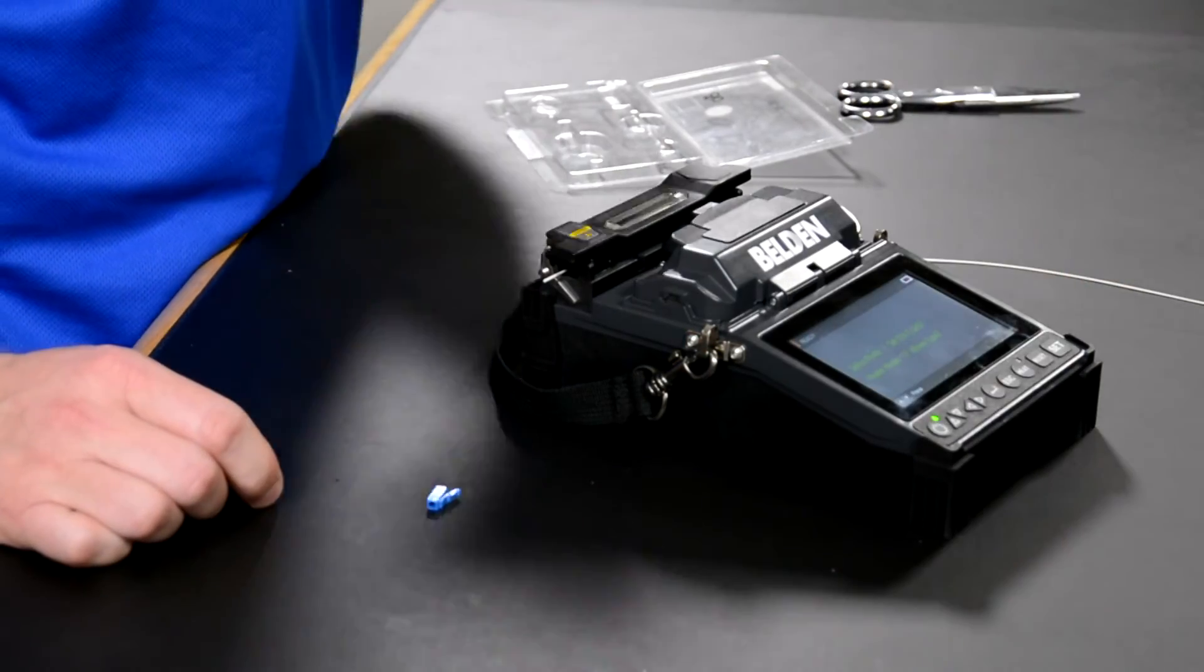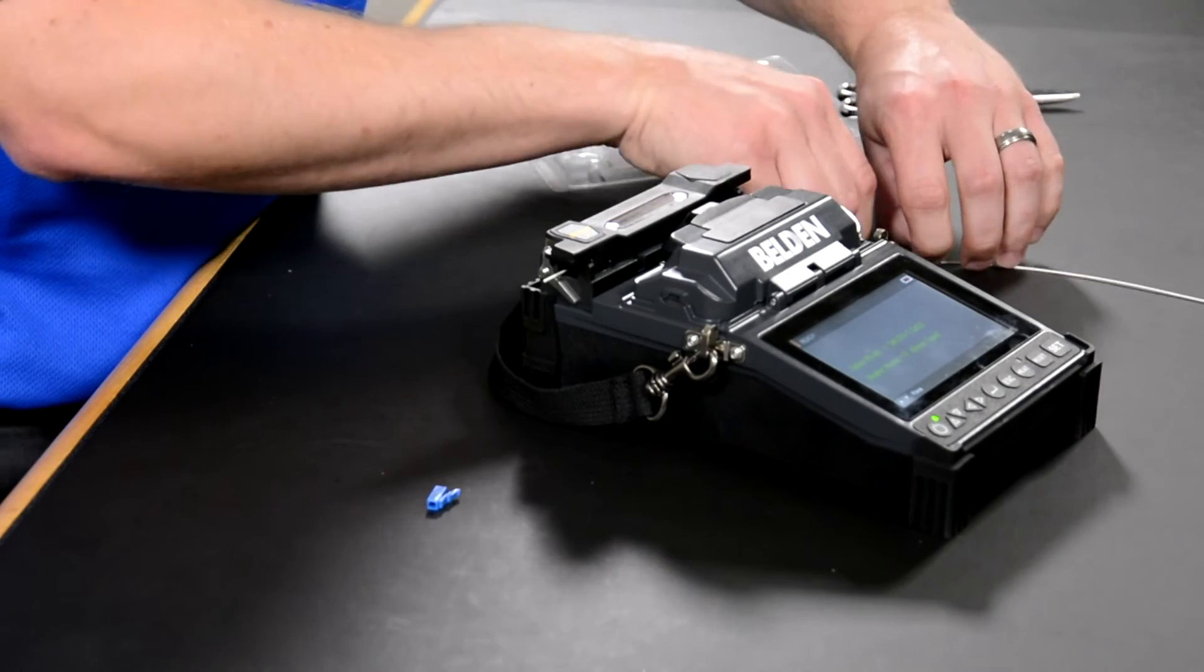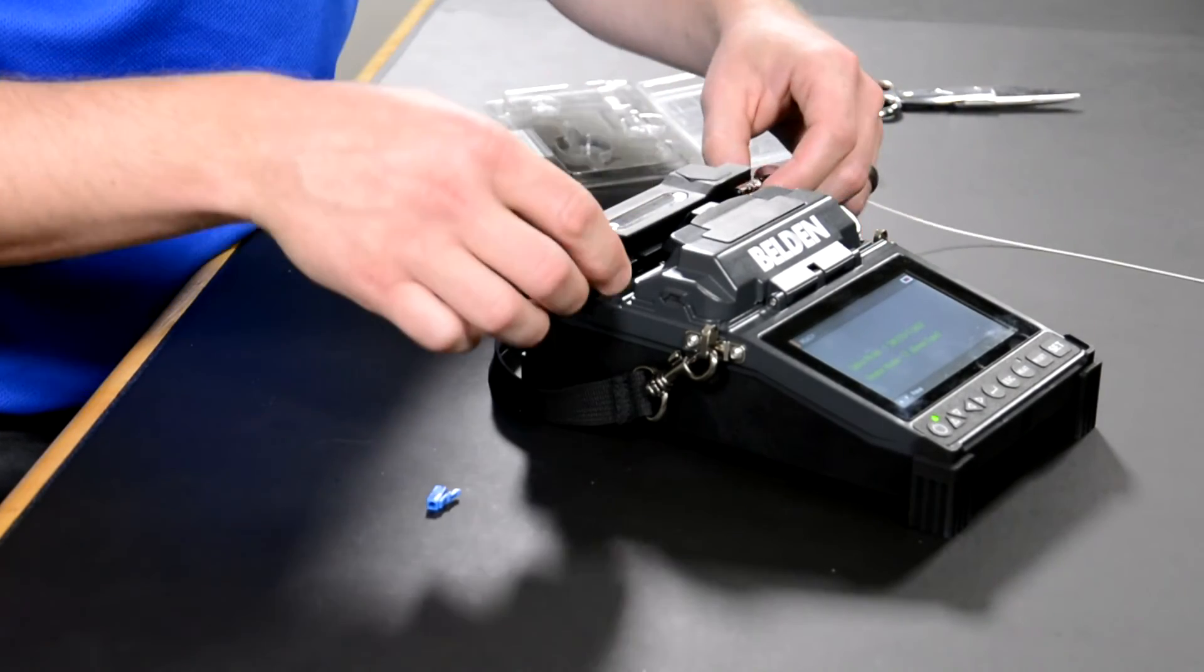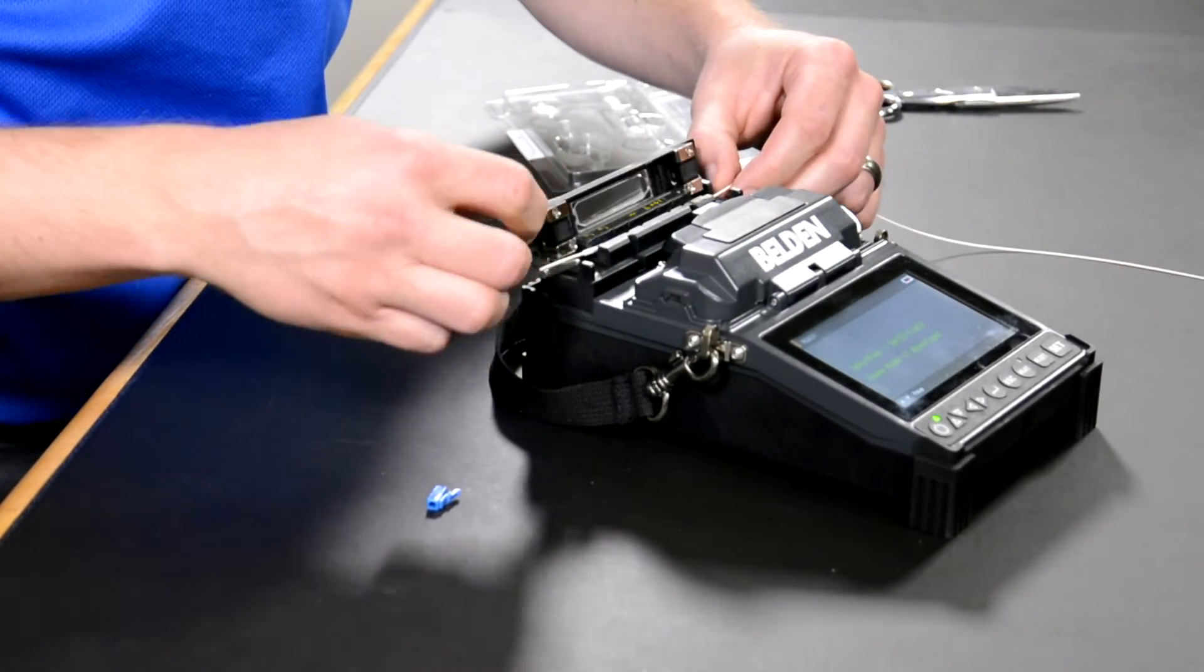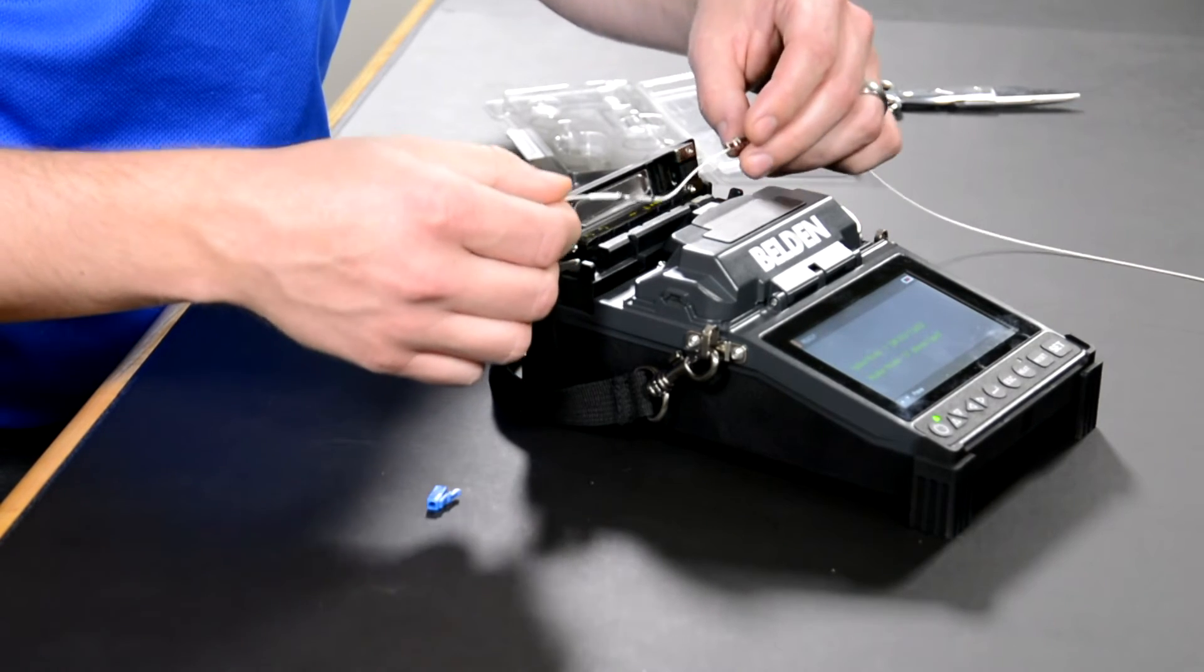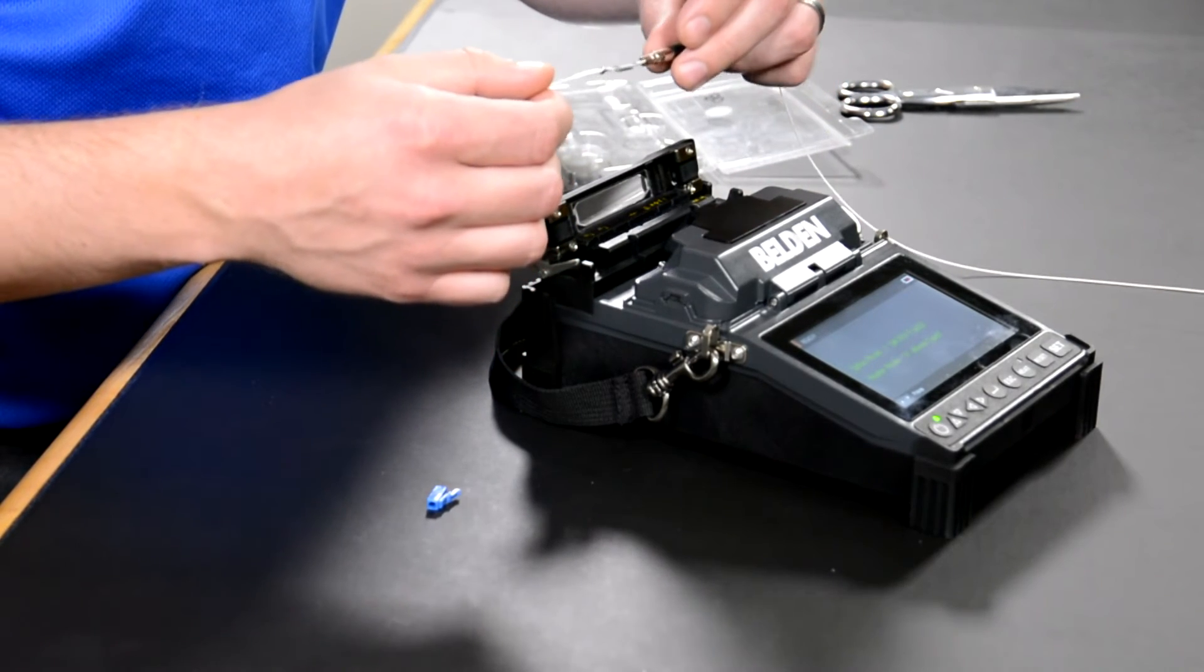Now that the light has gone off, the heating is complete and the heat shrink tube is shrunk around that splice so we can open that. When you pull this out be careful not to touch that spring because it can be hot.